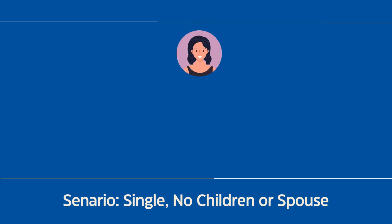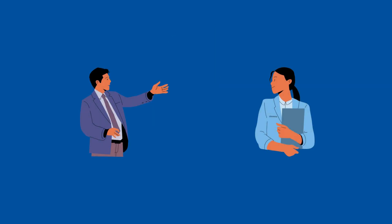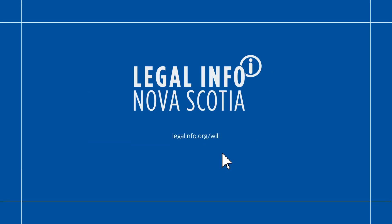Lastly, if you don't have children or a spouse, or you are separated from your spouse, you can divide your residue among up to 10 chosen beneficiaries, specifying the percentage for each person. Remember, it's crucial to plan for these scenarios to ensure your assets are distributed according to your wishes. See a lawyer if your situation is not listed or if you want to make arrangements different from what the app allows. Go to legalinfo.org/will for more information.